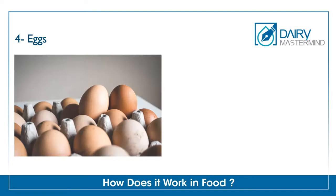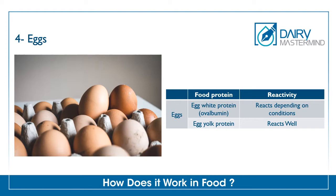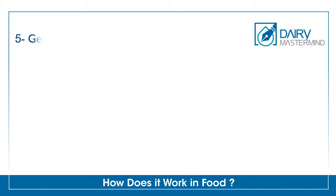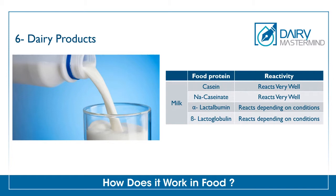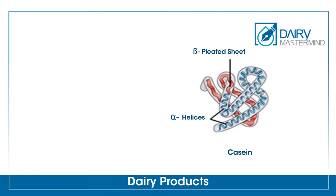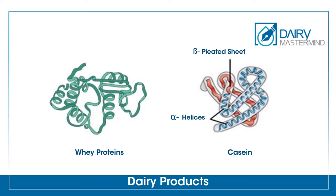In eggs, egg yolk protein reacts well and egg white protein reacts depending on conditions. Gelatin protein reacts very well with TG enzyme. In dairy products, which are the main topic of discussion here, casein proteins react very well with TG enzyme. But whey protein's reaction varies depending on the conditions. Because of their open tertiary structure, casein are more exposed and therefore considered to be more effective substrates for TG than whey proteins that have a quaternary structure.